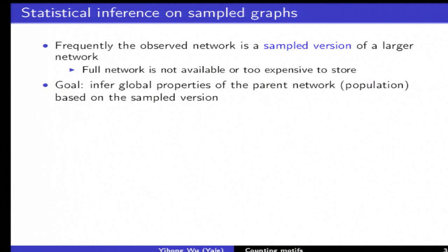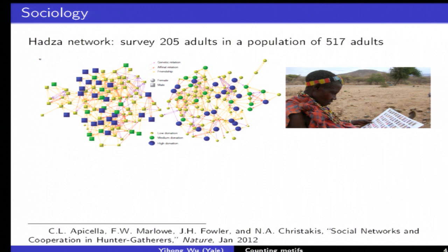A quick prototypical example is what sociologists do in field experiments. In this particular paper they were trying to study the social network structure of hunter-gatherer tribes. They have the roster of the entire tribe of 500 people, then they surveyed about 40% and asked them to identify their friends in the entire population. This is essentially what is done according to a neighborhood sampling mechanism.